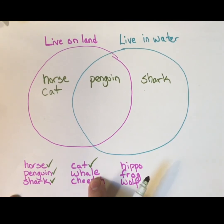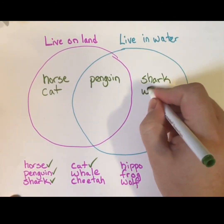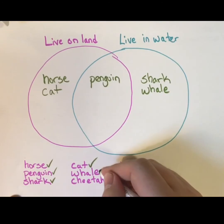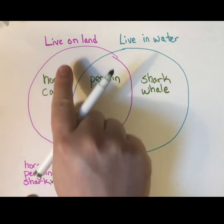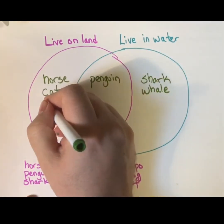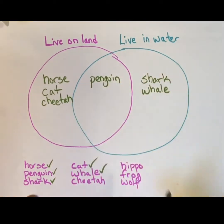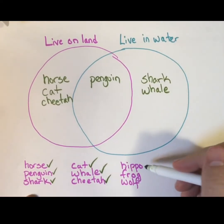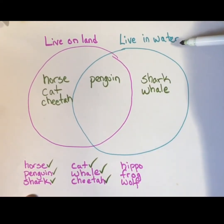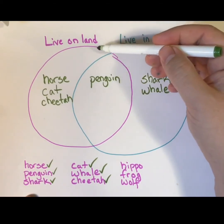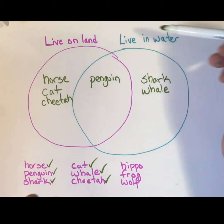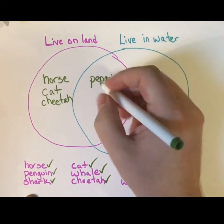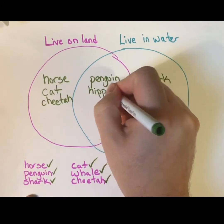Whales — I have never seen a whale walking around, so whales definitely live in the water and do not live on land. So that one goes there. Cheetah lives on land — they're a kind of cat, so they definitely like to live on land and do not like water. Hippopotamus: they spend a lot of time in water, but they also spend some time on land. So I need to make sure they're in the 'both places' spot of my Venn diagram, where my two circles overlap. So hippo definitely goes there.